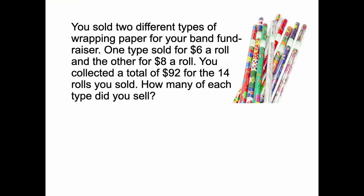You sold two different types of wrapping paper for your band fundraiser. One type sold for $6 a roll and the other for $8 a roll. You collected a total of $92 for the 14 rolls you sold. How many of each type did you sell?